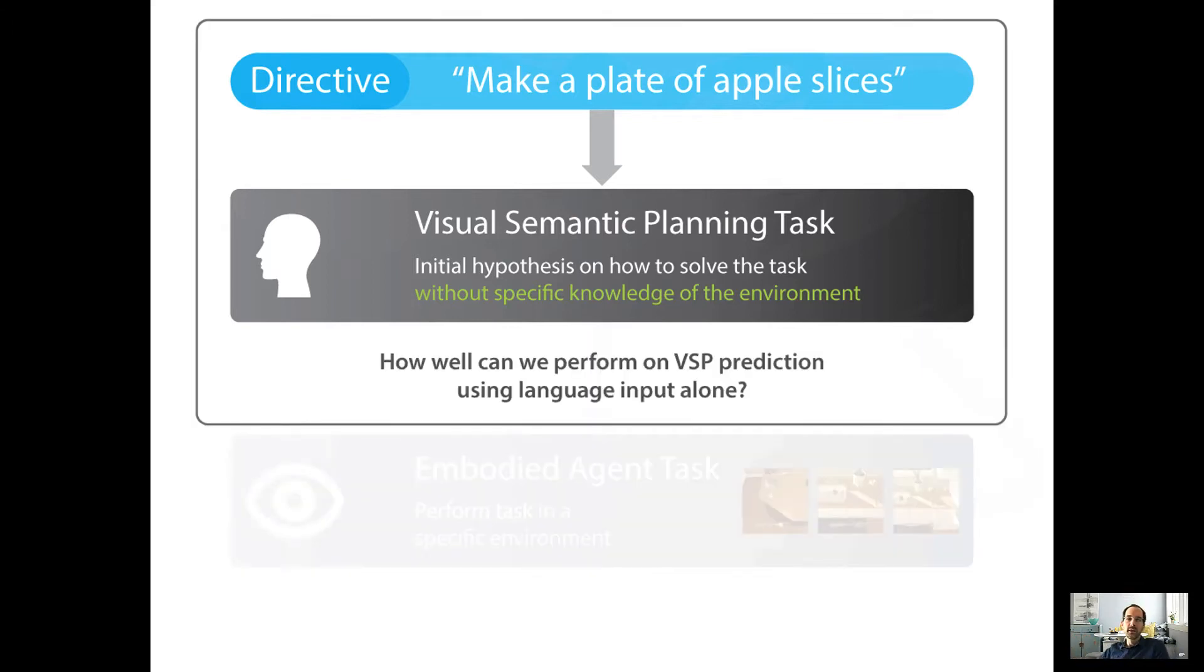That's basically what this study is about, visual semantic planning. How well could we perform on the visual semantic planning task, this hypothetical general level task, using language input alone without any visual input? And to spoil the story a little bit, the answer seems to be we can do pretty well on this.